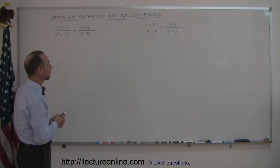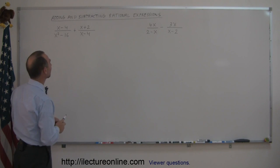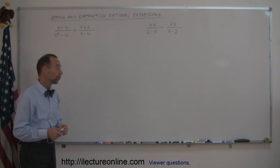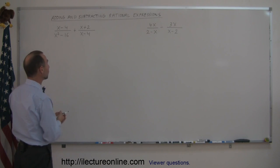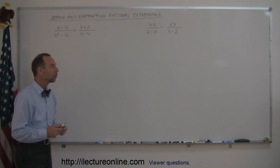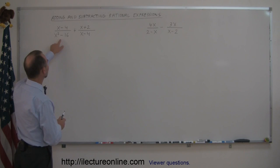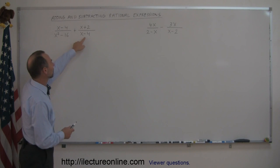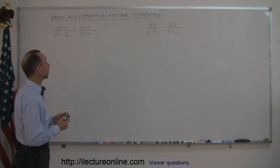Here are a couple of examples. If we look at the first example, we want to look at the denominators first. In order to add fractions, the denominators need to be the same, and obviously they're not the same. So what you want to do is find the factors in each denominator. If you factor this denominator, you'll probably see one of these binomials in there.